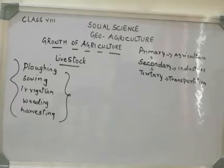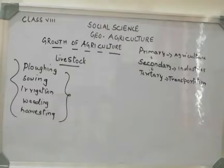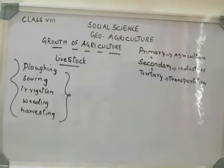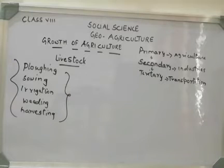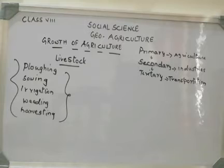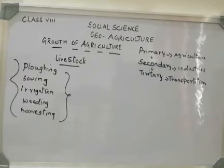Presently, 50% of the world population is directly or indirectly engaged in agriculture. In India today, 52% of the population practices agriculture for a living.